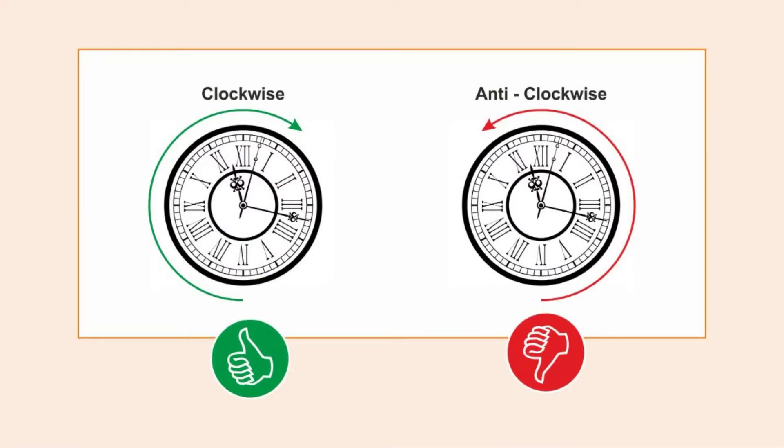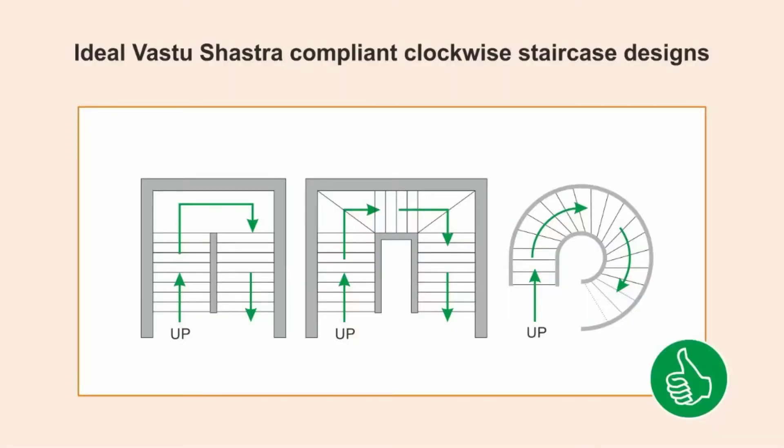Point number two is the orientation or flow of the staircase. The staircase needs to flow in a clockwise fashion. When a person climbs from a lower floor to an upper floor, they must move around in a clockwise fashion. In other words, when descending from the upper floor to the lower floor, they will move in an anti-clockwise fashion. That covers the orientation.